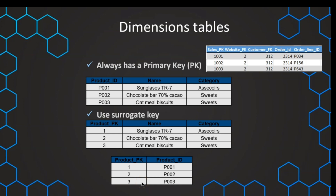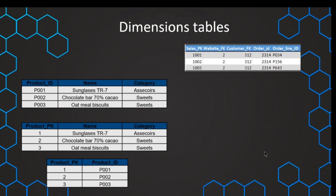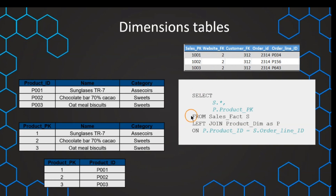Now the question is how can we create the correct reference from our fact table to the dimension table if we use surrogate keys. In the fact table, which originally comes from the source system, we still have the natural key. We can use the lookup table, or if we have both the surrogate and natural key in our table, we can create a join.